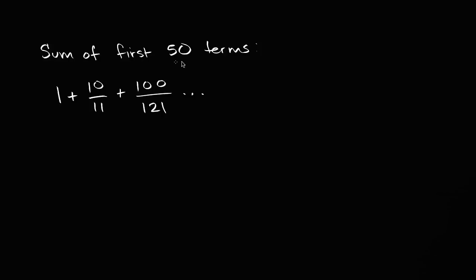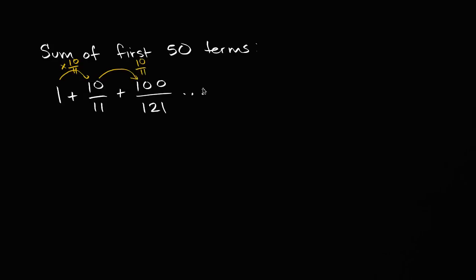We're asked to find the sum of the first 50 terms of this series, and you might immediately recognize that it is a geometric series. When we go from one term to the next, we're multiplying by 10 elevenths. To go from one to 10 elevenths, you multiply by 10 over 11, then by 10 over 11 again, and we keep doing this — and we want to find the first 50 terms.